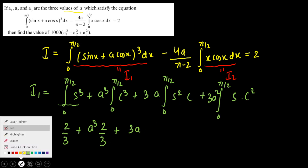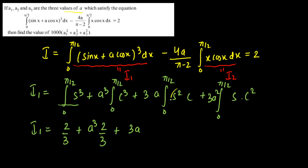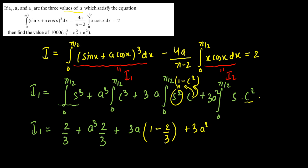For the third term, we convert sin²x = 1 − cos²x, so sin²x·cos x becomes cos x − cos³x; the integral from 0 to π/2 of cos x is 1 and of cos³x is 2/3, giving 1 − 2/3. For the fourth term, we write cos²x = 1 − sin²x, so sin x·cos²x becomes sin x − sin³x; the integral of sin x is 1 and of sin³x is 2/3.